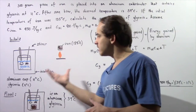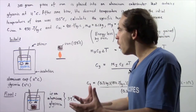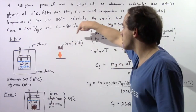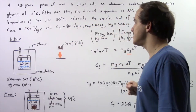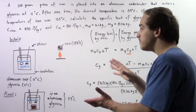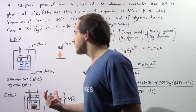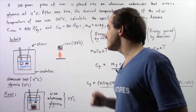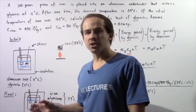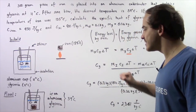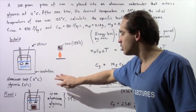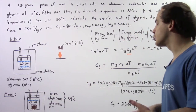Let's begin by looking at our two diagrams. Before we place the iron into our calorimeter, we heat the iron to a temperature of 185 degrees Celsius. Then we take this and place it into our calorimeter. Before placing it in, the temperature of the aluminum cup and the glycerin is 11 degrees Celsius. After we place it into our calorimeter and wait, the temperature equalizes at 39 degrees Celsius — the temperature of the iron, aluminum, and the glycerin.